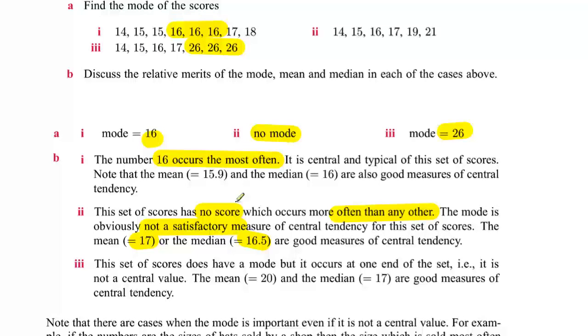What about the last one here? We've got scores here of 26 at the end which make up a mode and so it occurs at one end of the set of data. So it's really not a central value at all. The mean is 20, the median 17 - they're really good measures of central tendency, but the mode is right at the end which gives us some information but does not give us an idea of the middleness of the score. So the question you'll ask with any of these is do they give us a good idea of central tendency?